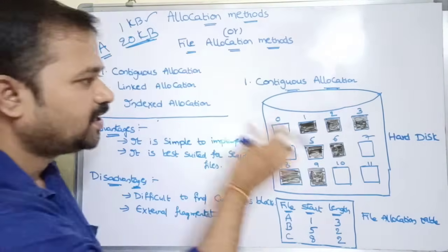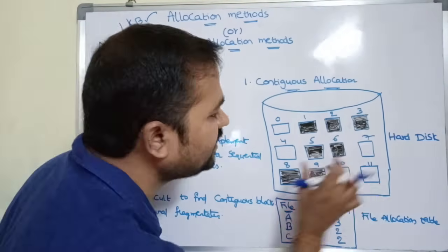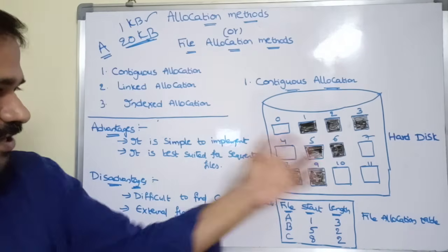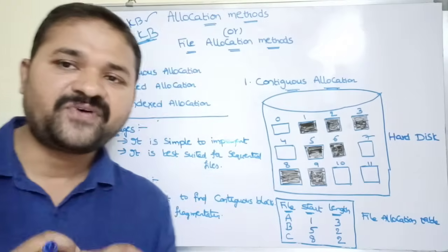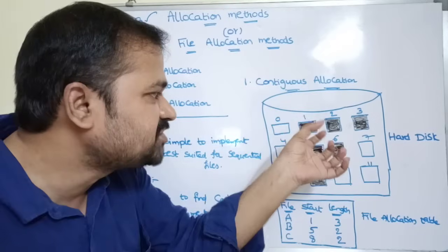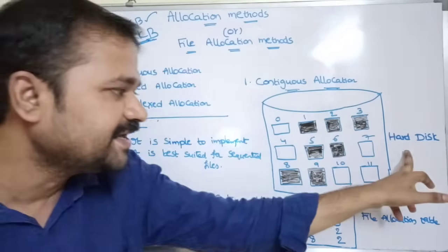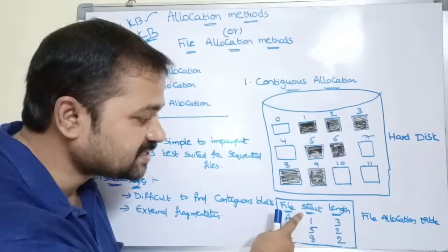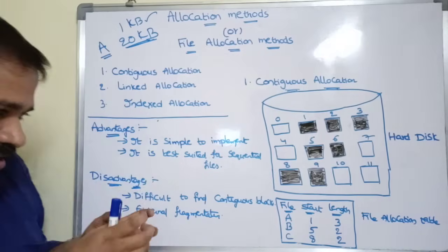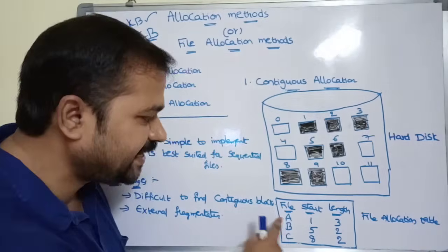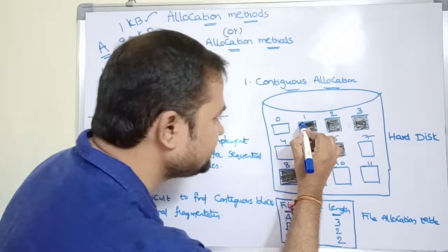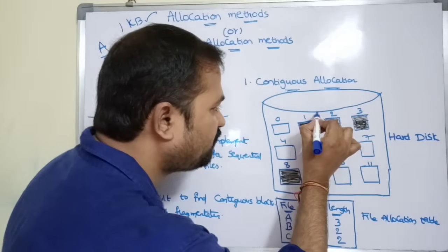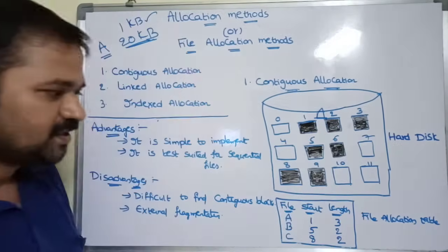This diagram shows the hard disk and the file allocation table. The hard disk has 12 blocks ranging from 0 to 11. The file allocation table contains information about each file stored in secondary storage. It has three columns: name of the file, starting block number, and length of the file. For the first file, name is A, starting block is 1, and length is 3 blocks — so blocks 1, 2, and 3 are occupied by file A.